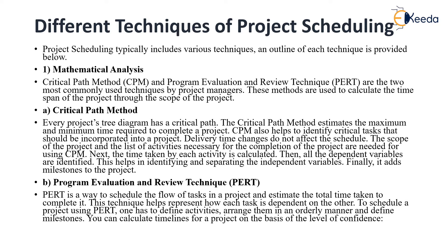The first one is Mathematical Analysis, which consists of the Critical Path Method and Program Evaluation and Review Technique — the two main commonly used techniques by Project Managers. These methods are used to calculate the time span of the project through the scope of the project.